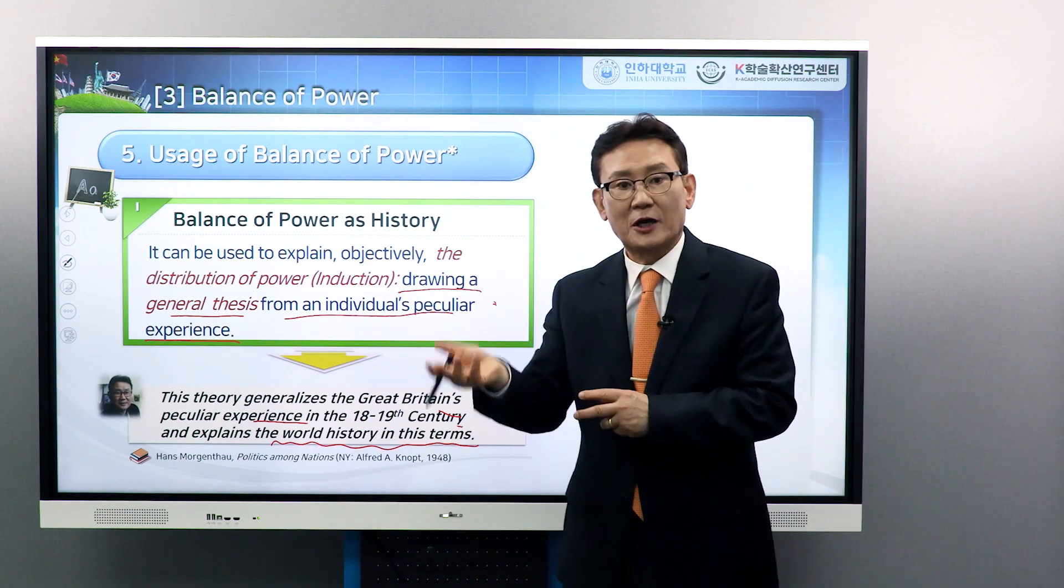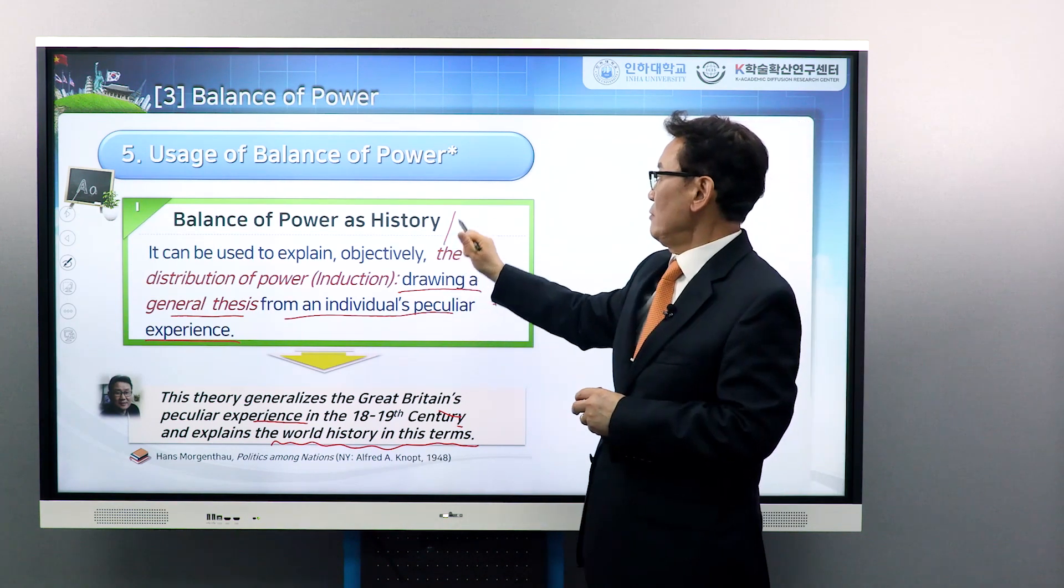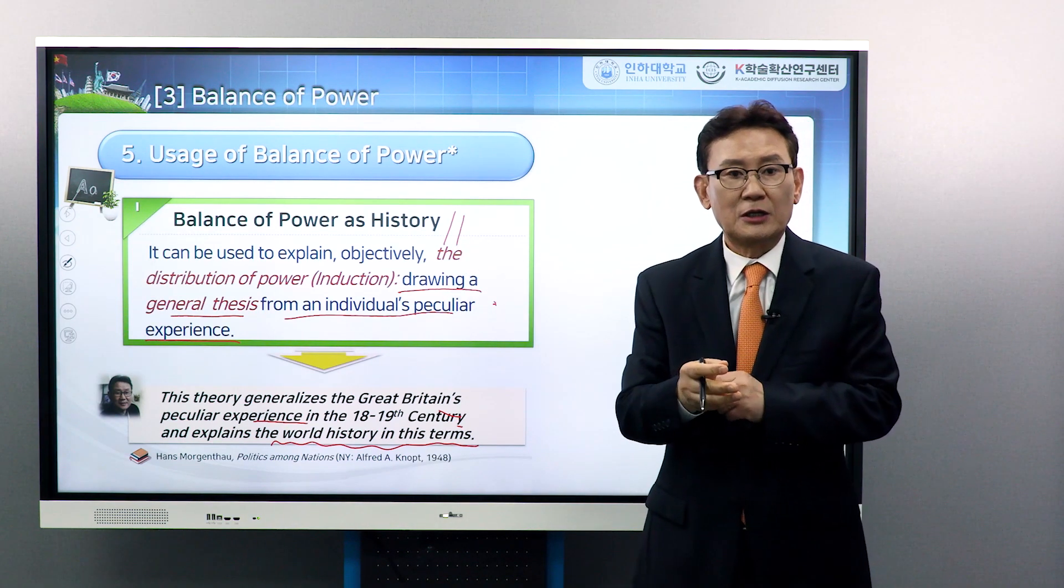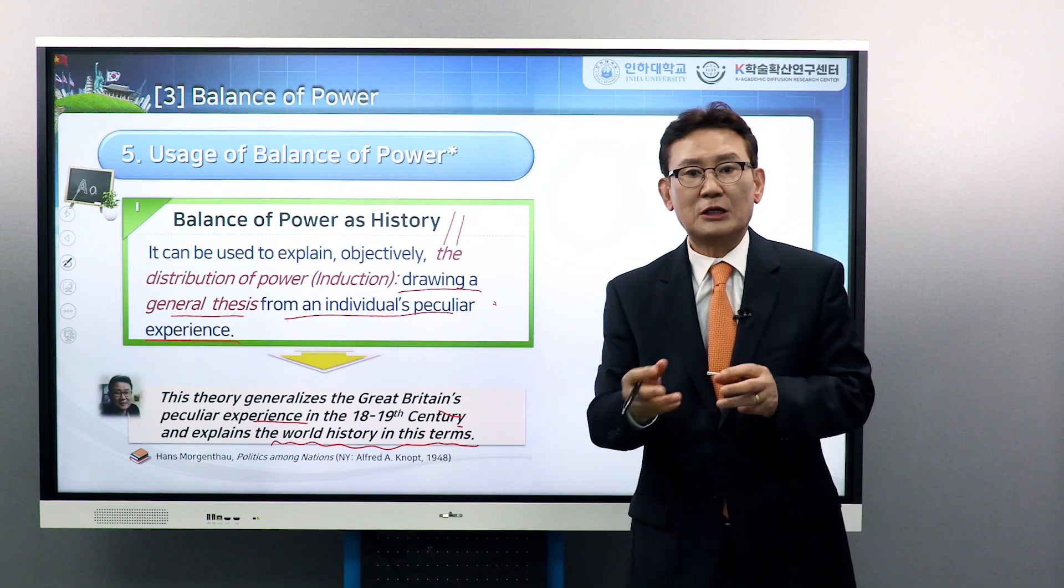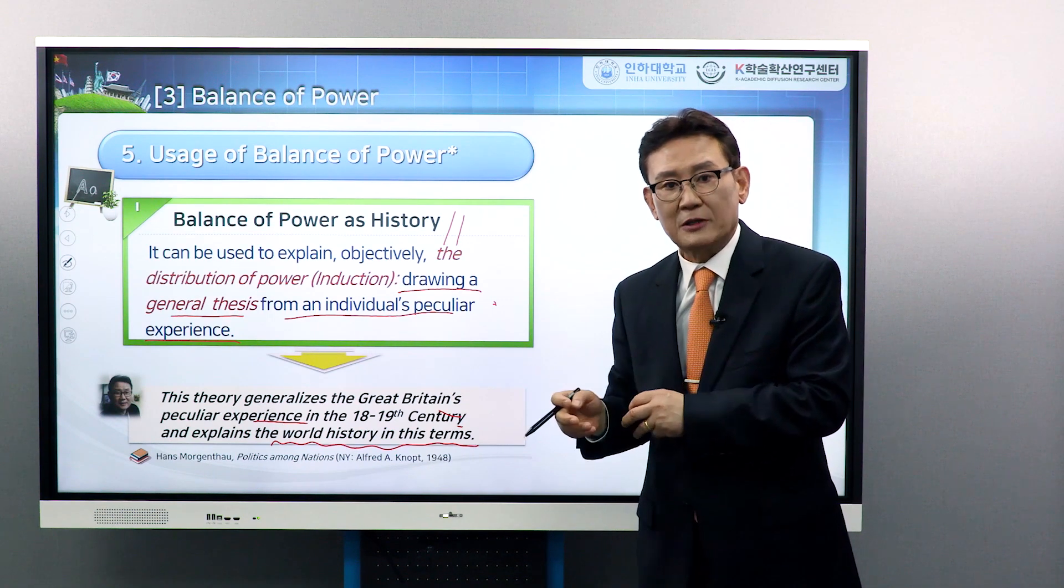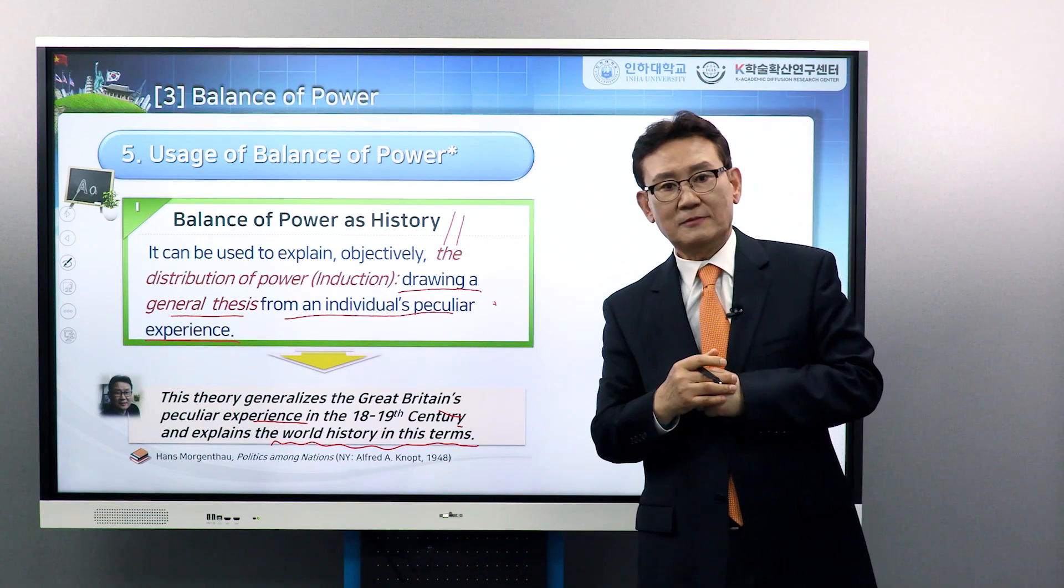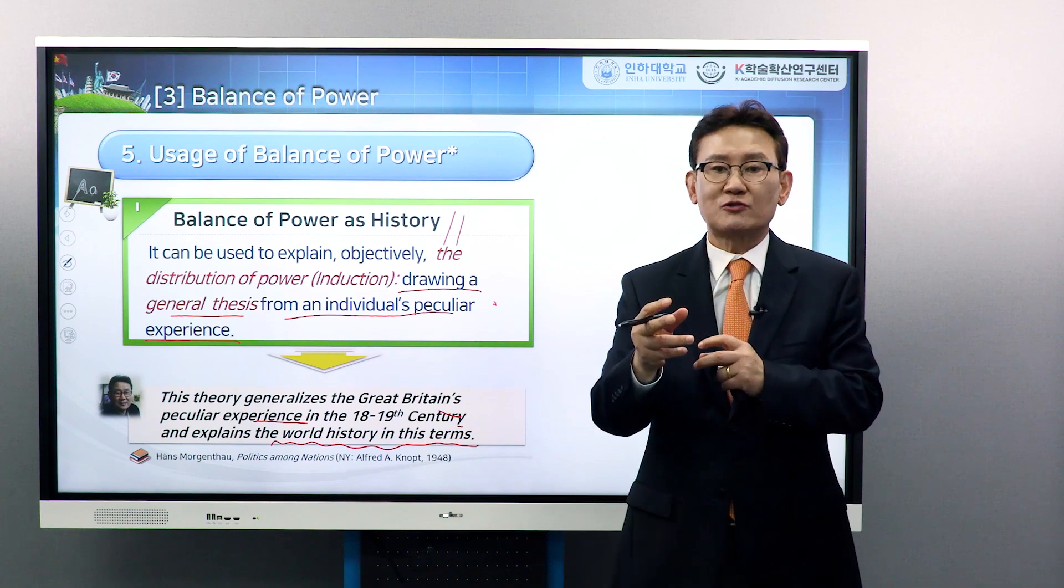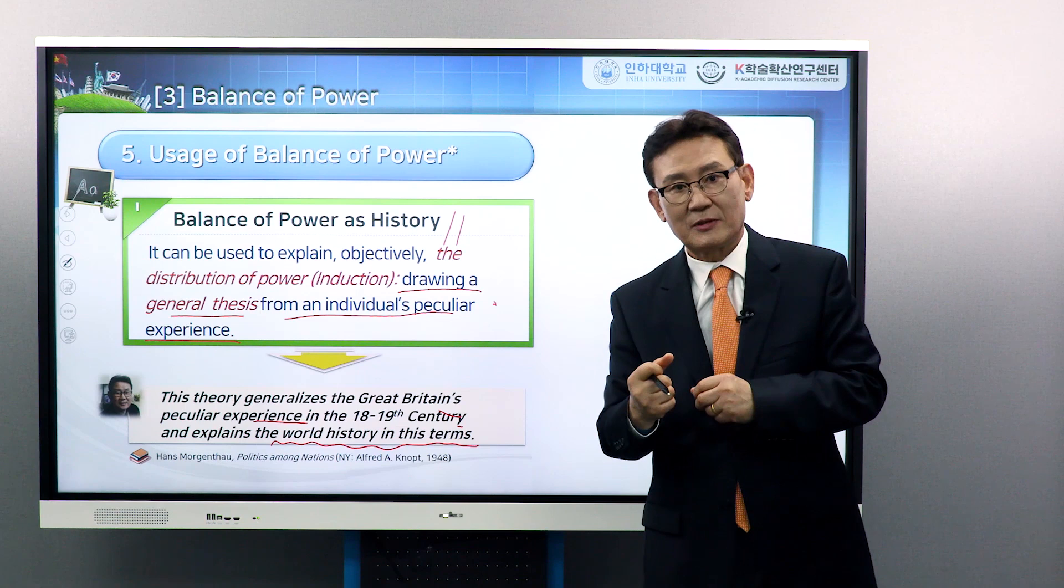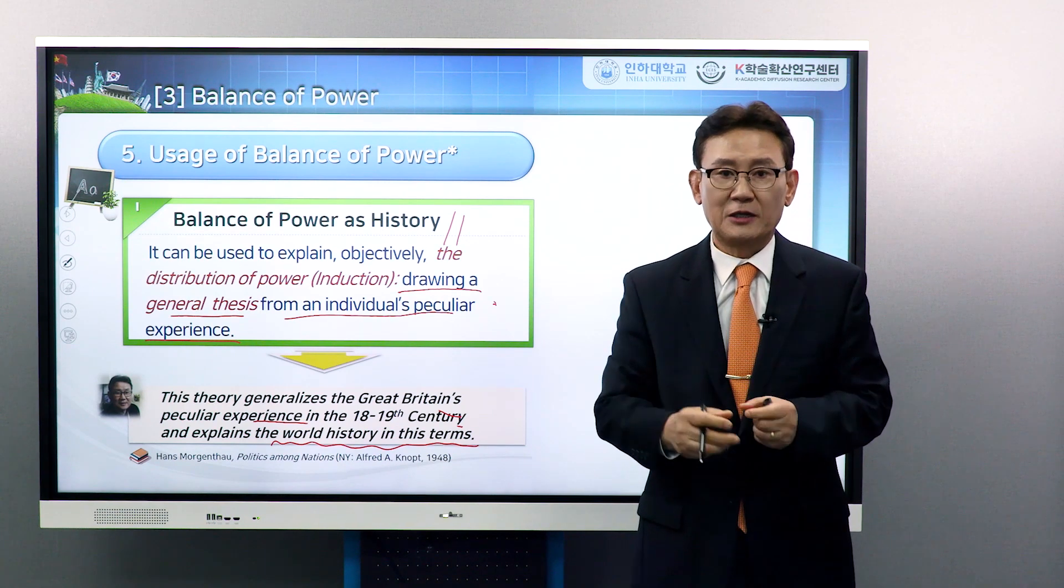With the experience of the UK in the 19th century, we used this framework to explain East Asian politics, making a balance of power between the US and Japan on one hand and China and Russia on the other. That is the inductive way of explaining history. Obviously, balance of power is a useful tool to explain history.